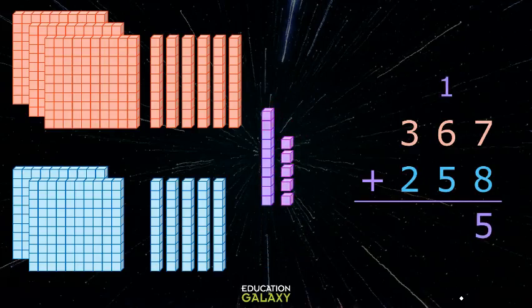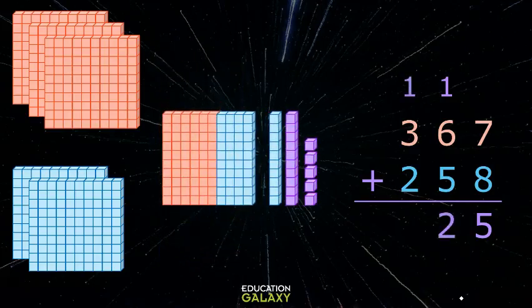Okay, now we have 6 tens, 5 tens, and 1 more 10 for a total of 12 tens. But we can't write 12 in the tens place. What we really have is 10 tens and 2 tens. Those 10 tens become 100 and go to the neighbors, and our 2 stays with the tens.